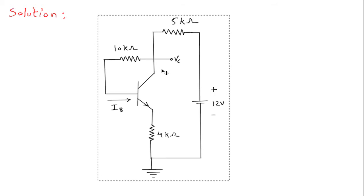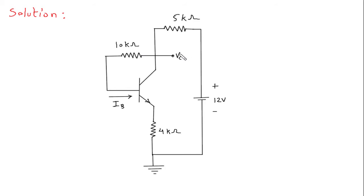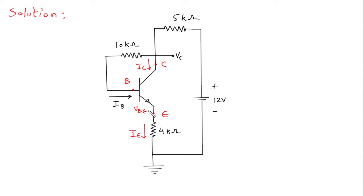Solution: First we will redraw the circuit. As we can see, this is a transistor — this is the collector, this is the emitter because the arrow is here, and this is the base. So this current is the base current IB, this current will be the collector current IC, and this current is the emitter current IE. Voltage between base and emitter will be VBE (plus to minus), and voltage between collector and emitter will be VCE. Let's call this current I1, this current IB, and this current IC.